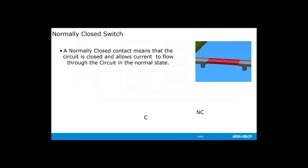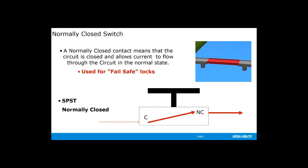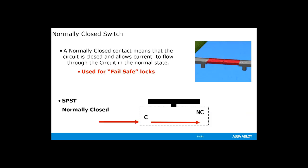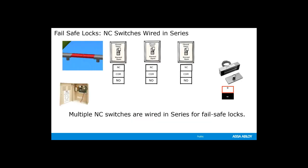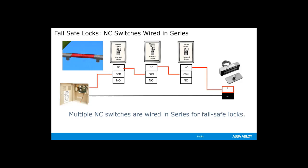A normally closed contact means that the circuit is closed and the current is allowed to flow through the circuit in its normal state. Normally closed switches are used for fail-safe locks. With fail-safe locks, the locks always require power to keep them secure, and the current needs to be cut to the lock to unlock the door. When multiple switches are required to unlock one fail-safe lock, the normally closed switches are going to be wired in series. Activation of any of the switches will open the circuit, cutting the electricity to the lock and unlocking the door.